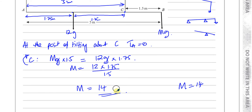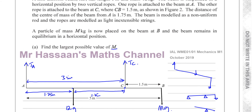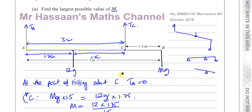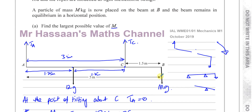If we increase m beyond 14, it will no longer be in equilibrium — it will start to tilt clockwise, meaning clockwise moments exceed anticlockwise moments. So 14 is the largest value of m such that the beam remains in equilibrium.